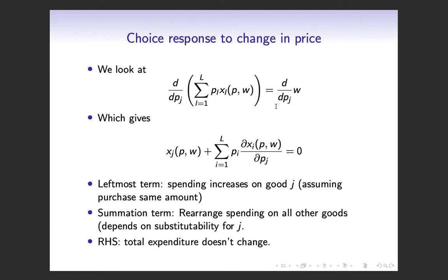We take the derivative of both sides with respect to the price of good j. That gives us an equation where good j is pulled out separately — so the summation over i does not include good j. When we expand and differentiate the p_j · x_j term, we just get x_j. The summation term captures how consumption of each good i changes with respect to a change in p_j, which depends on whether goods are substitutes or complements.